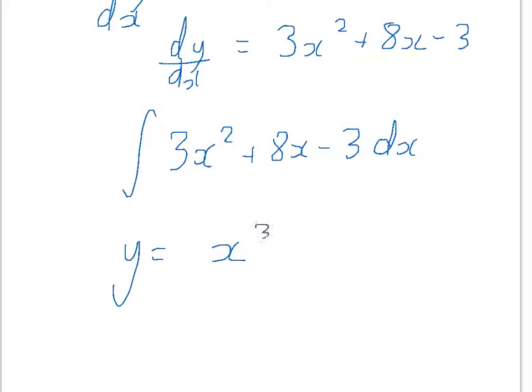Then x to the power 1, add 1 to the power makes it 2, and 8 divided by 2 is 4, so 4x squared. Minus 3x—remember minus 3x really means minus 3x to the power of 1, so add 1 to the power makes it minus 3x. And then you've got your constant value to add on, plus c.